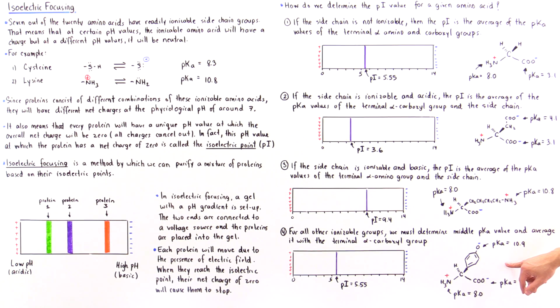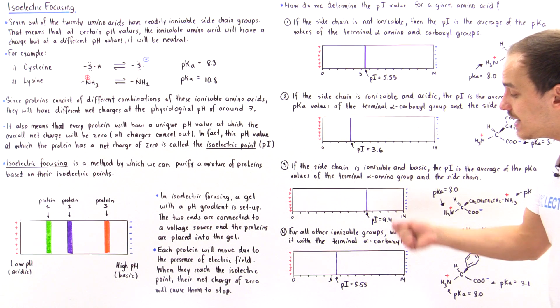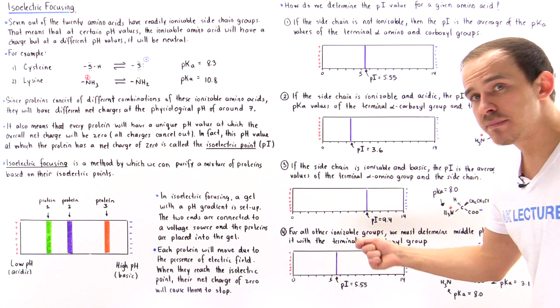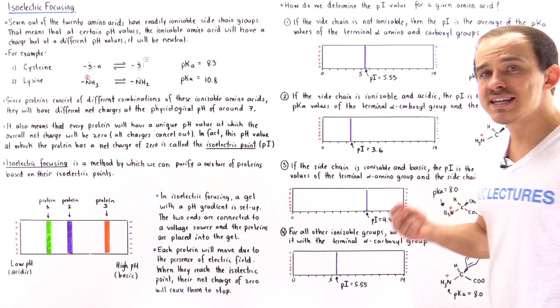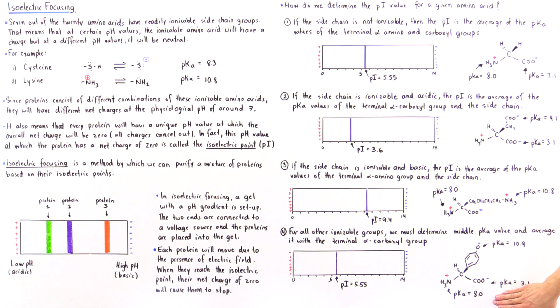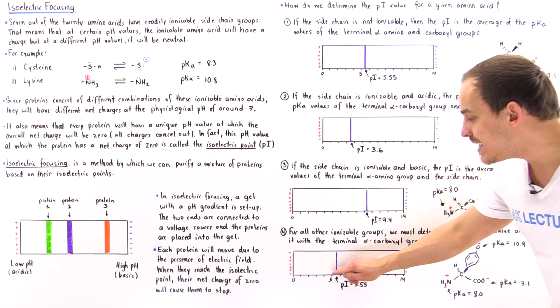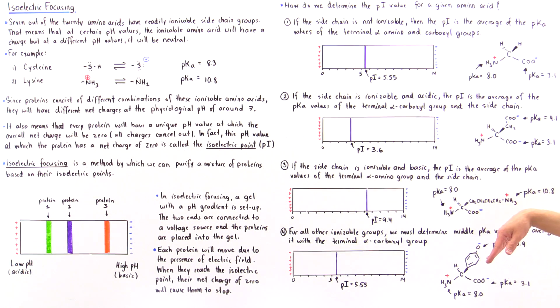The value for our tyrosine will be 5.5, and once again at that pH value of 5.5, all these charges will exactly cancel out. So if we place our amino acid on this line here, it will not move in this direction nor will it move in this direction.